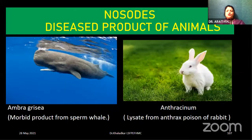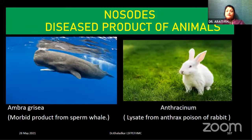Next, nosodes derived from animals. First classic example: Ambra grisea — the morbid product from the sperm whale, found in its belly. And Anthracinum — prepared from the rabbit — an anthrax poison; the live state is taken for its preparation.